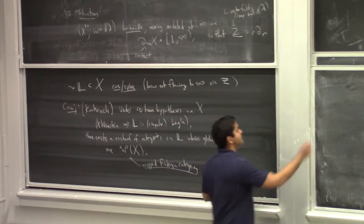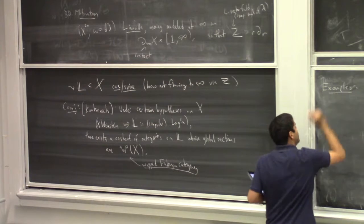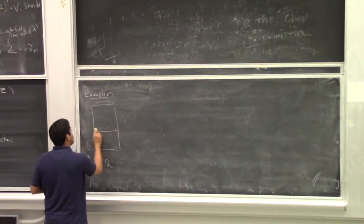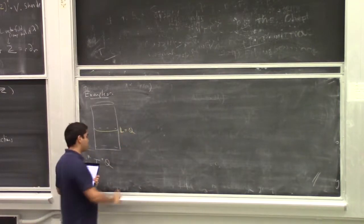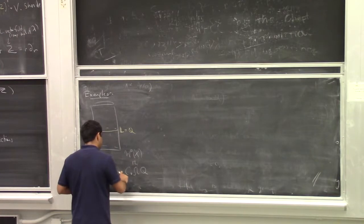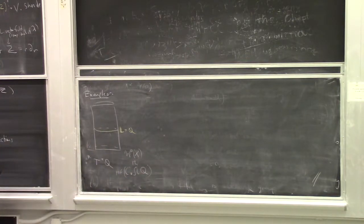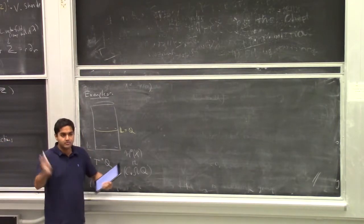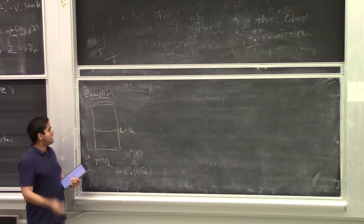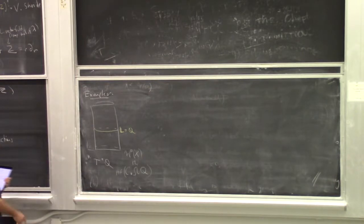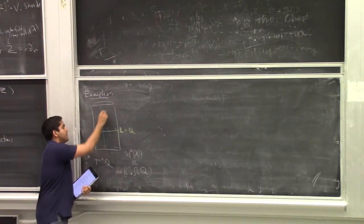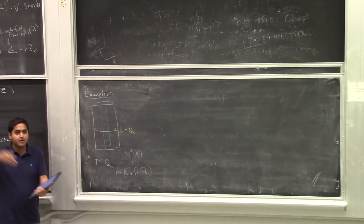In our first example, we look at a cotangent bundle. It has a canonical Liouville form whose spine is the zero section. The wrapped Fukaya category of this cotangent bundle is perfect modules over chains of the base space, which is a homotopical generalization of pi-1 essentially. So this should behave the way pi-1 does with respect to open sets on the base.